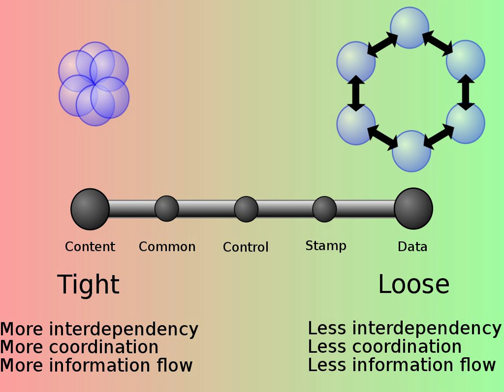Common coupling is said to occur when several modules have access to the same global data, but it can lead to uncontrolled error propagation and unforeseen side effects when changes are made.